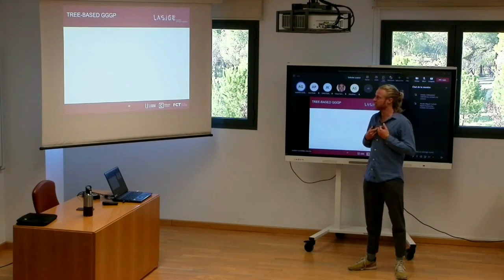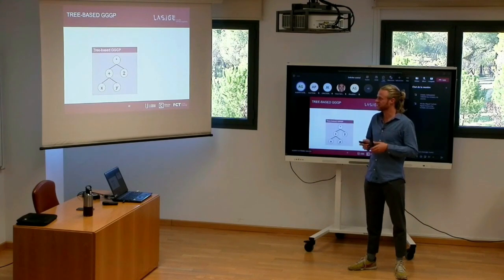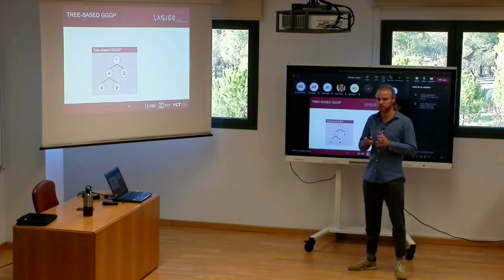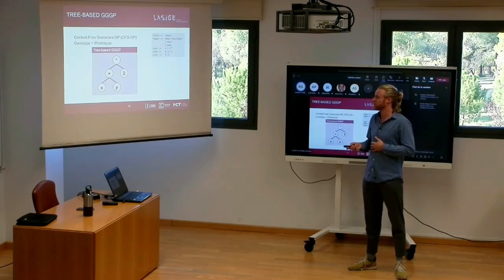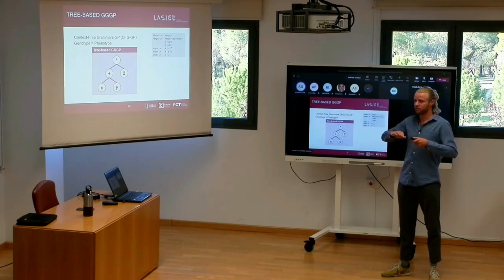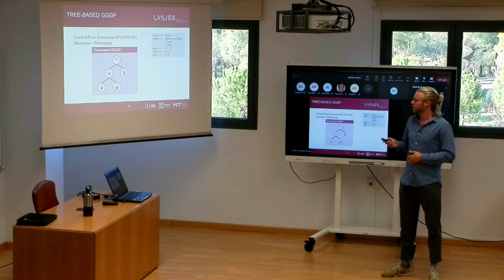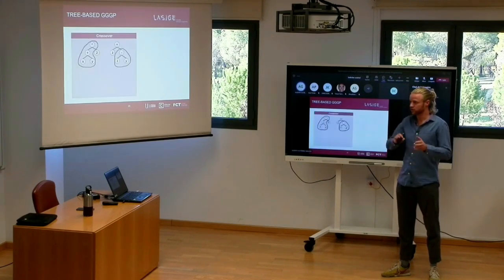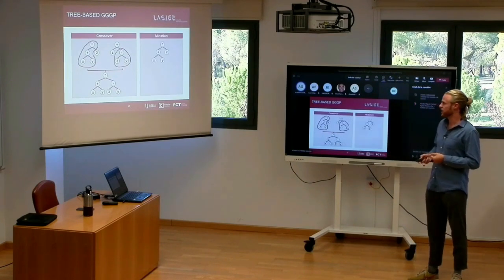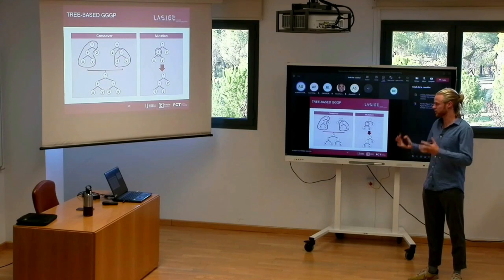The representation I use mostly is tree-based Grammar-Guided Genetic Programming. Instead of having a difference between the genotype and the phenotype, it uses trees as the individuals themselves — the genotype equals the phenotype. Tree-based GGGP is often called context-free grammar GP. The grammar defines how we initialise a tree. Crossover takes two subtrees and combines them into a new tree — this is harder to implement but makes more logical sense. Mutation takes one node and changes it into a new subtree.